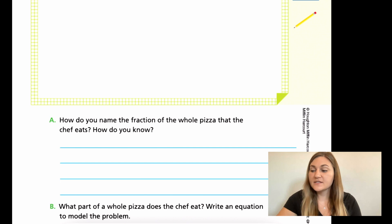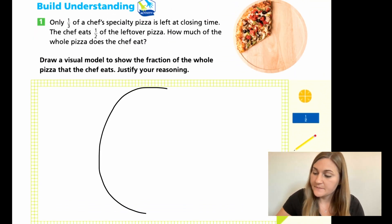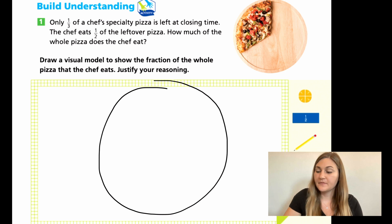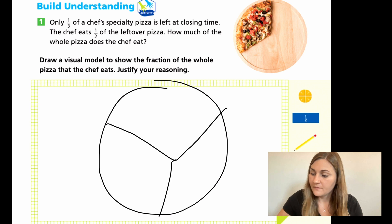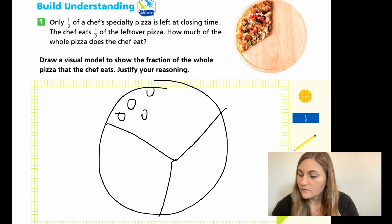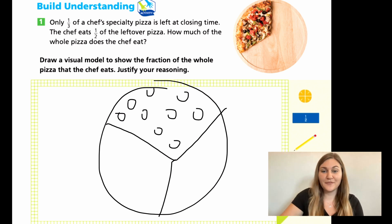Alright, let's go over this. So let's draw our pizza as a circle. Okay. And it's showing this one third piece of pizza. So let's go ahead and draw here is the toppings on my one third of pizza.